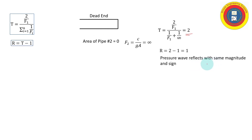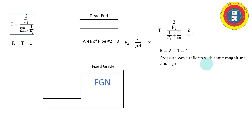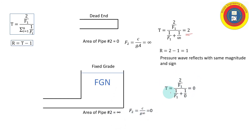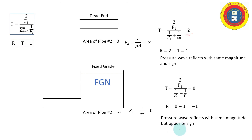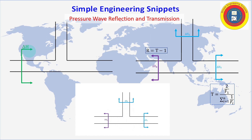For the other extreme — a pipe connected to a very large tank or reservoir (fixed grade node) — pipe two's area is infinity, making its elastic factor zero. One over zero is infinity in the denominator, so the transmission factor T equals zero. The reflection factor R equals negative one: an incoming wave to a large reservoir reflects with the same magnitude but opposite sign.